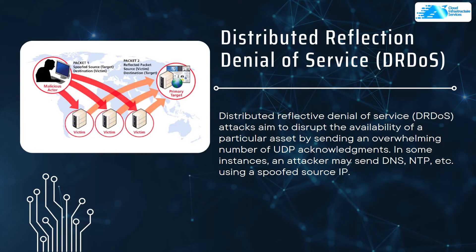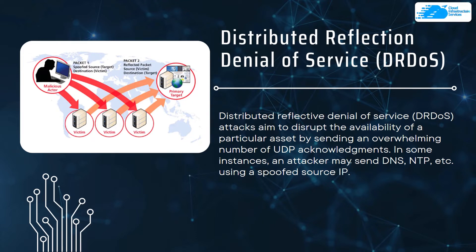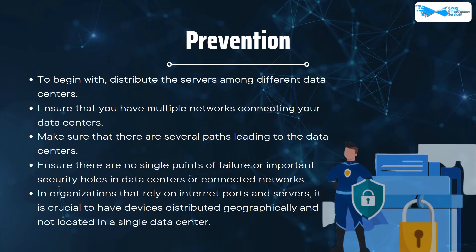Number two on our list is Distributed Reflection Denial of Service, also known as DrDoS. This attack aims to disrupt the availability of a particular asset by sending an overwhelming number of UDP acknowledgments. In some instances, an attacker may use DNS, NTP, and other protocols with a spoofed source IP.